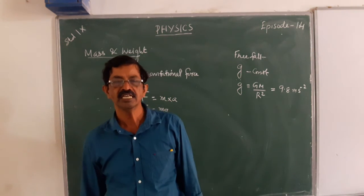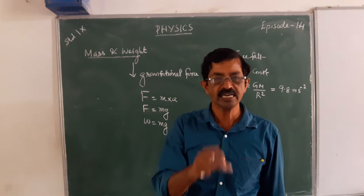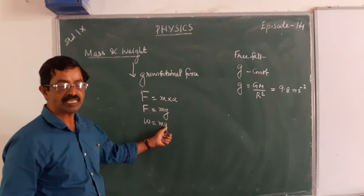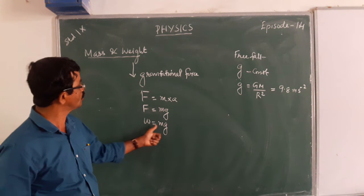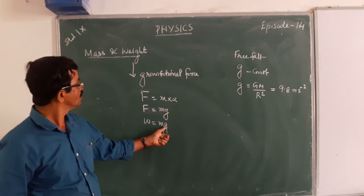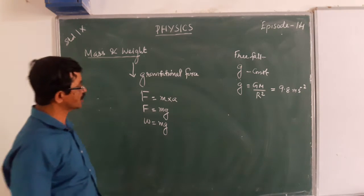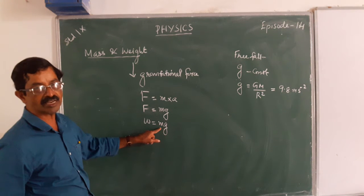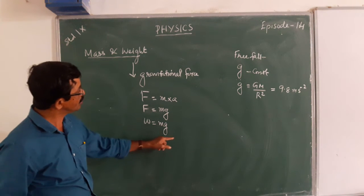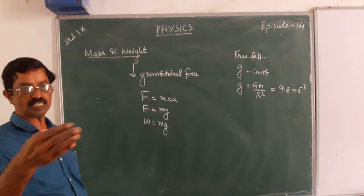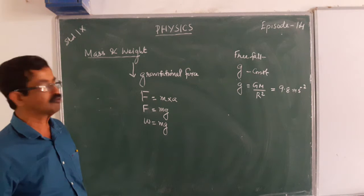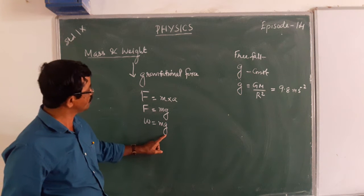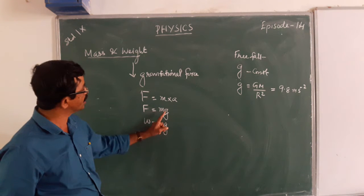Weight of a body is the force of attraction of Earth on that body, measured as W = mg. But the value of g is not the same everywhere. G is constant for a particular place, but it varies on the surface of Earth. The value of g is more at the poles but less at the equator.